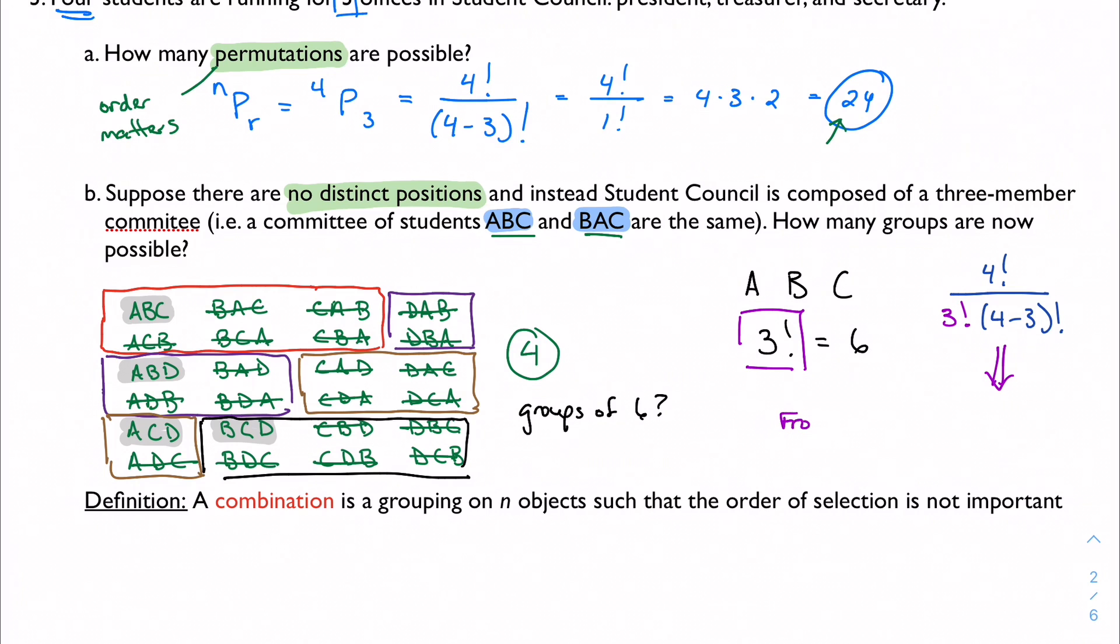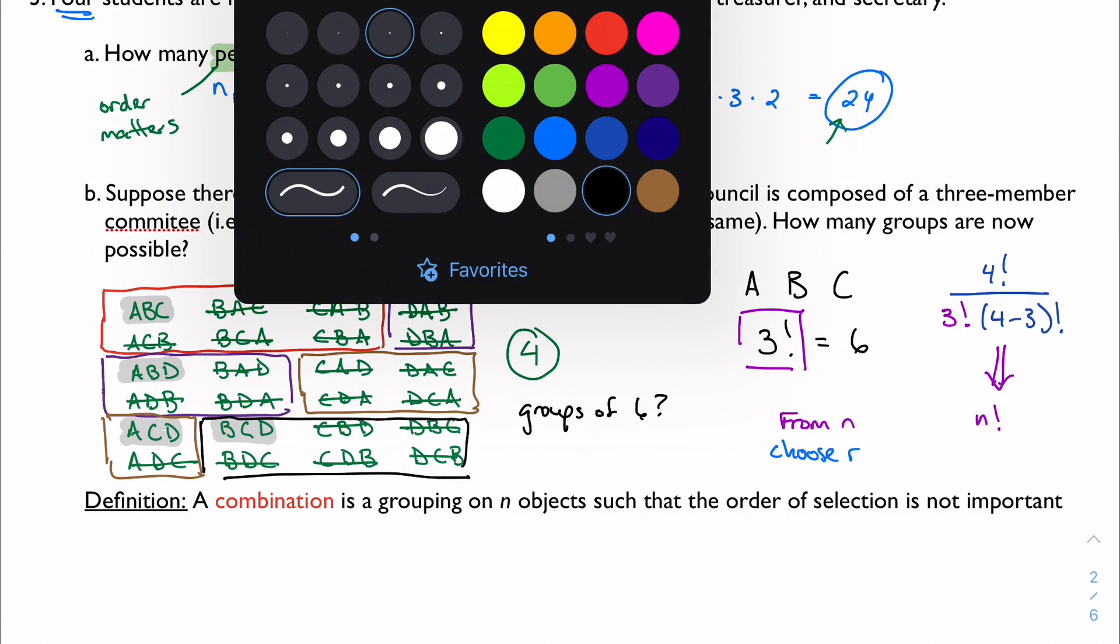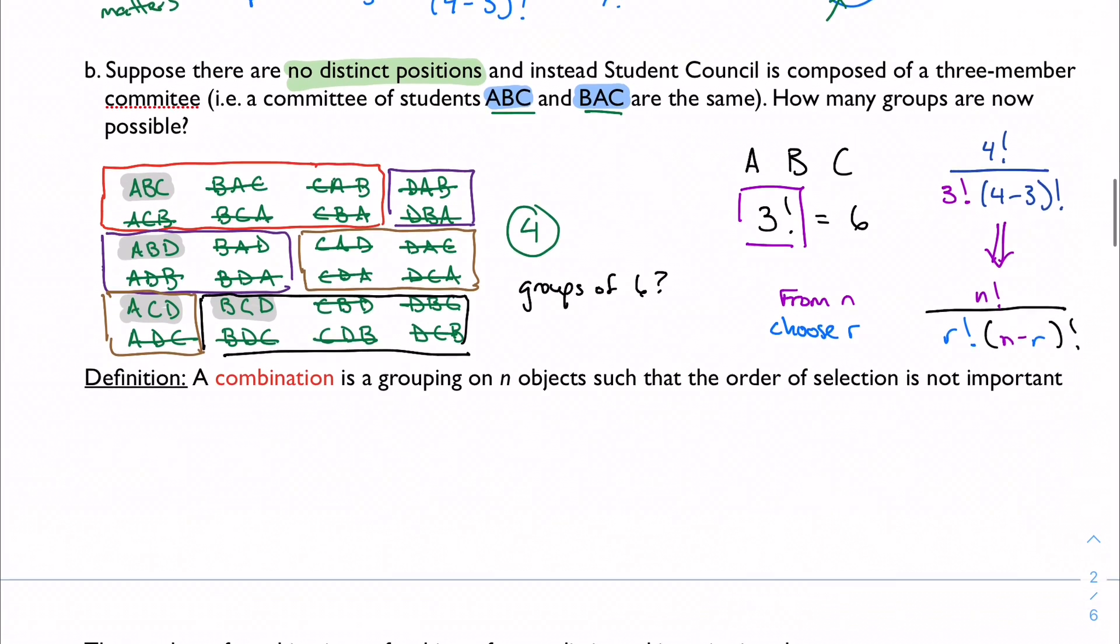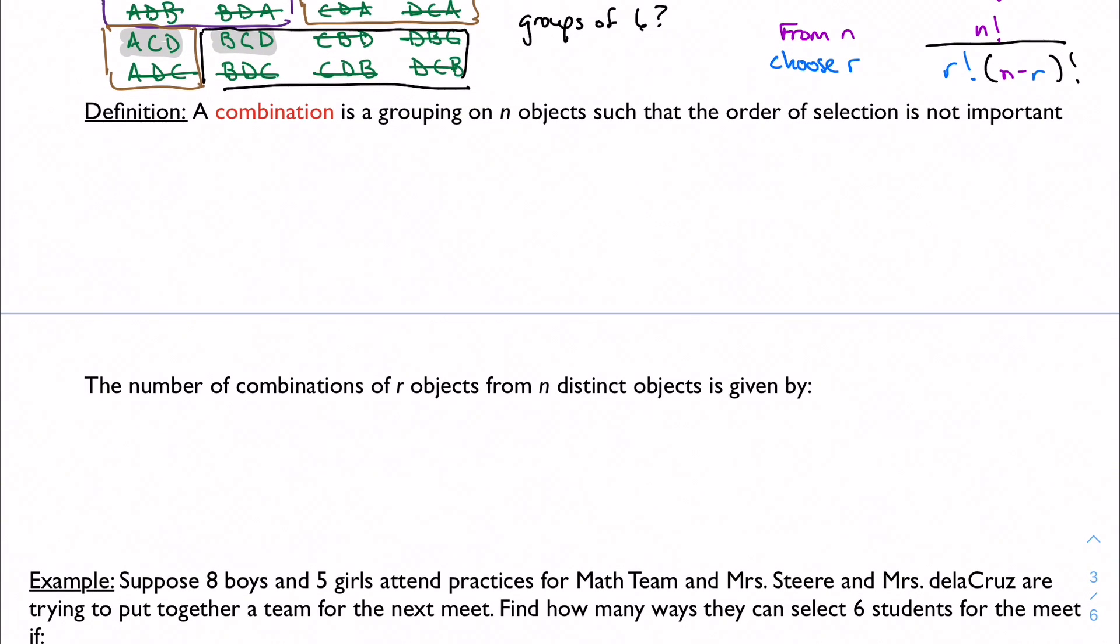So how does this generalize? Well, if I'm saying from N choose R, and the order doesn't matter, now I have N factorial divided by R factorial times N minus R factorial. This is another really important result. And if the walkthrough is a little bit confusing, it's okay, as long as you've got this formula, that's the most important part here.